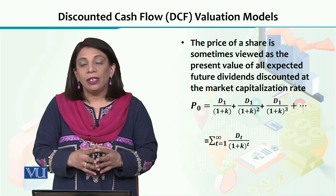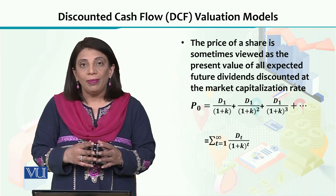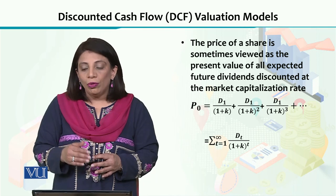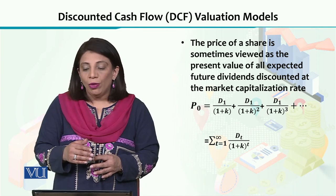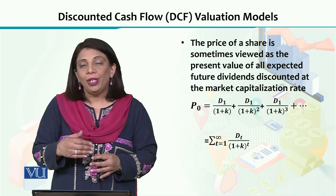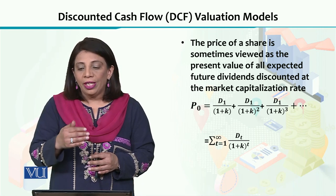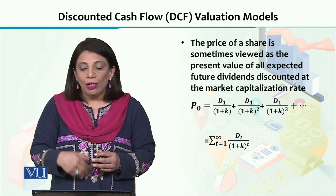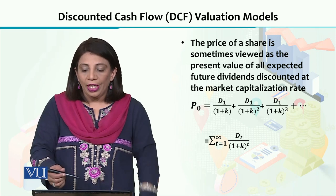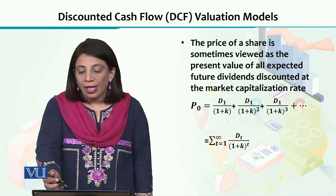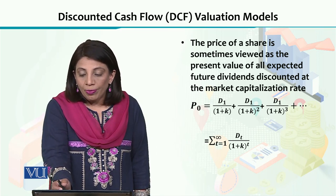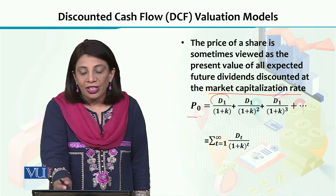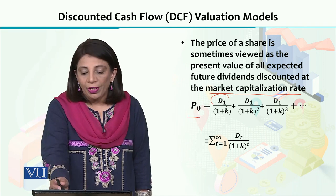Looking at the discounted cash flow valuation model: when we want to find the present value of all projects or investments — that is, the dividends we will receive in the future — we calculate the present value. As you can see, there is a formula here. We need a market capitalization rate K to calculate the present value, discounting dividends from the first year, second year, third year, and so on.